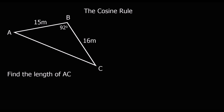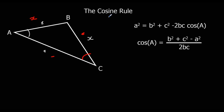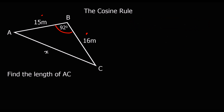Okay, let's look at an example. Here I've got: find the length of AC. So this is x. We can see we've got an angle and the two sides next to it. That means it's a cosine rule question. The cosine rule to find the length is: a squared equals b squared plus c squared minus 2bc cos A.